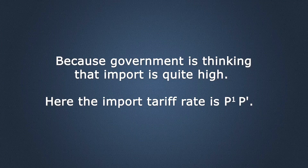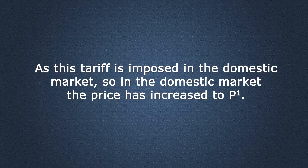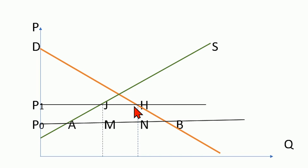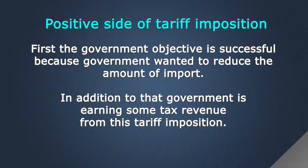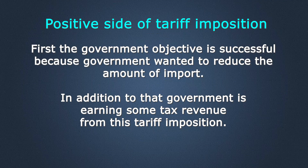Now if the government thinks the amount of import is quite high, the government may impose tariff. Tariff is simply the tax — import tariff means import tax. If you want to purchase some commodity from the rest of the world, you have to pay tax to your government. Here the tariff rate is P1 minus P0, and as this tariff is imposed, the domestic price increases to P1. When the price increases to P1, demand falls and domestic supply increases, and as a result the import is reduced to JM. So government is reducing the amount of import and at the same time earning tax revenue from this import tariff — these are the two positive sides of tariff imposition.